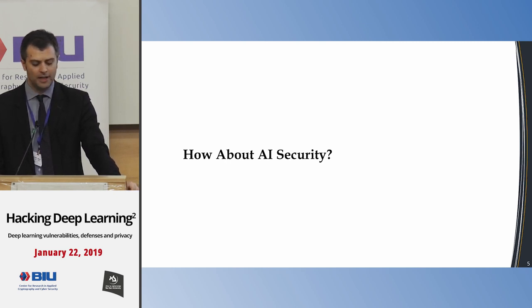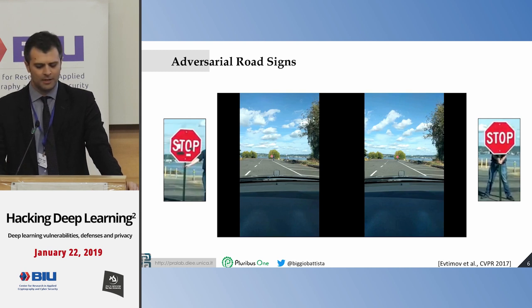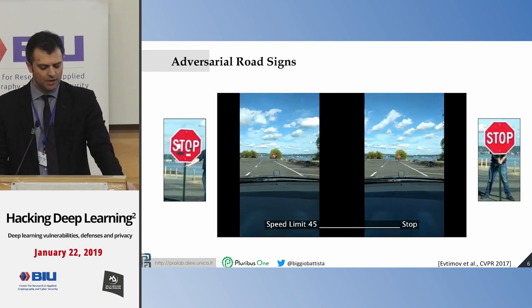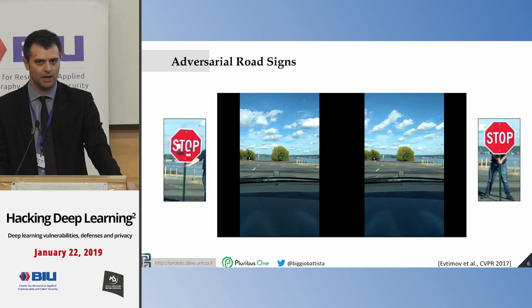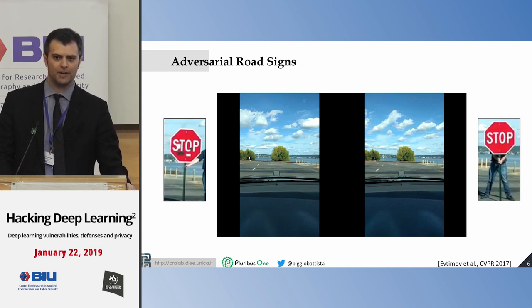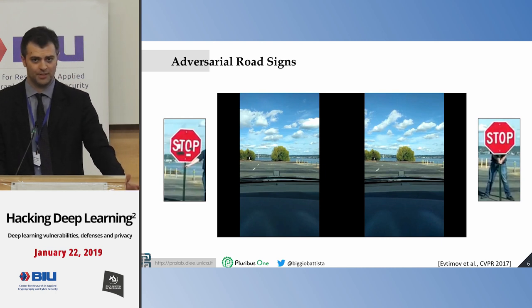There are several examples showing you can actually fool these systems with physical and practical attacks. One popular example is a modified stop sign: on the left, a stop sign with stickers is misrecognized as a speed limit for most video frames, while on the right, a clean stop sign is correctly recognized. The stickers are not placed randomly — there is a specific noise crafted to mislead the learning algorithm.